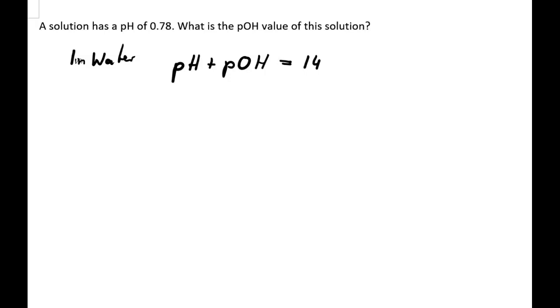And now we can very easily calculate the pOH of this solution. So pOH just simply is we arrange this equation we bring the pH to the other side and it would be 14 minus the pH and if we put in the numbers the pOH therefore would be 14 minus 0.78.